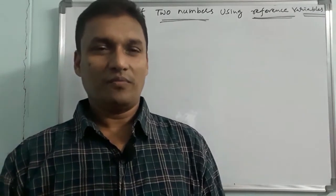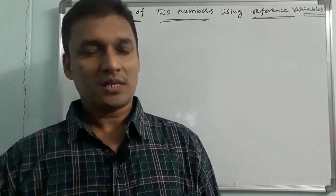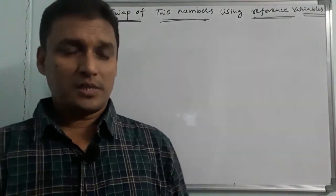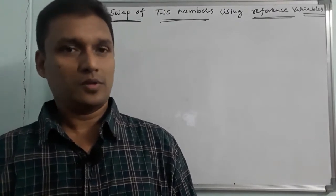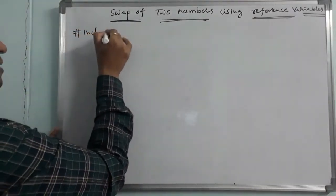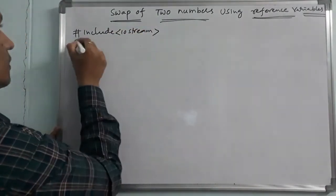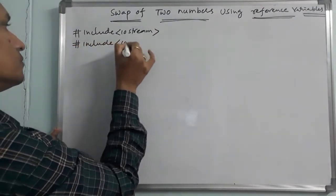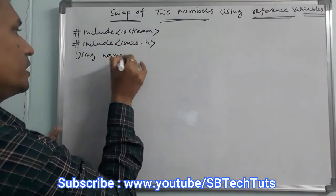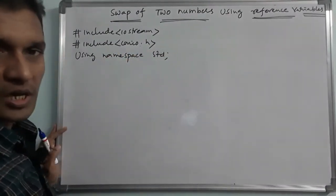Hi everyone, this is Sudhakar Bogam. Welcome to SB TechTunes. In this video we will discuss a small program that is swap of two numbers using reference variables. We will implement this step by step with a small example program. First, the header files: hash include iostream, hash include conio.h, using namespace std.